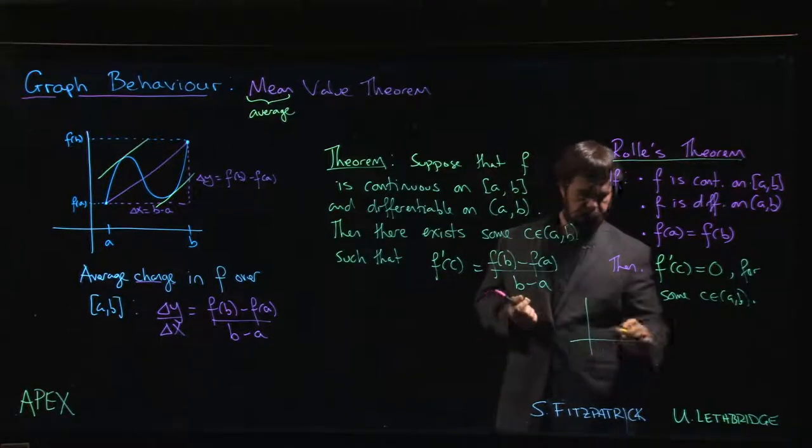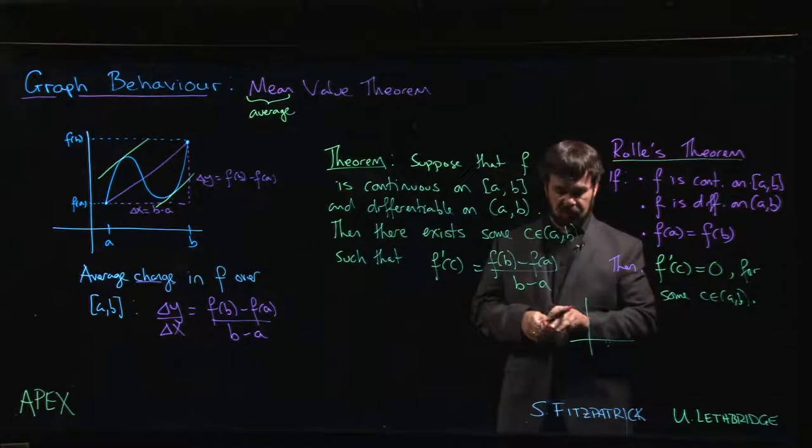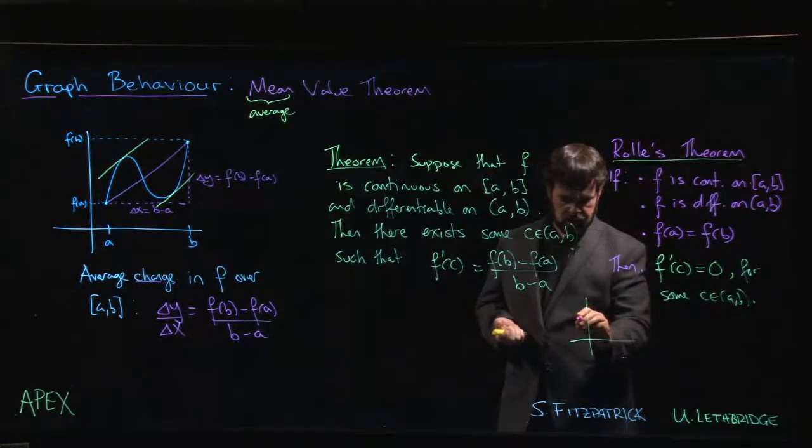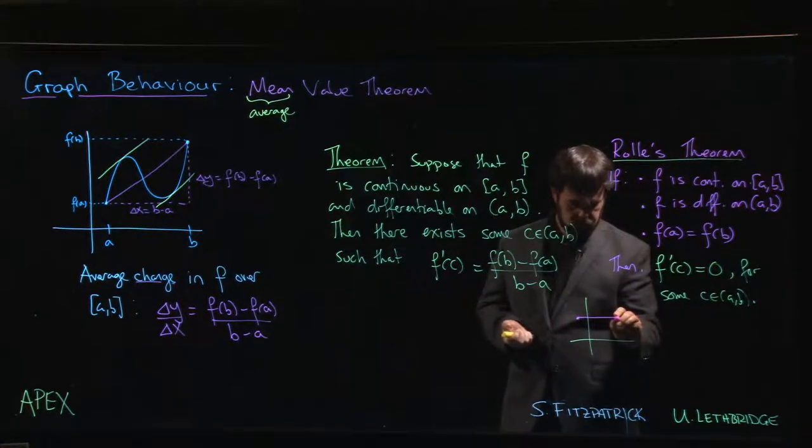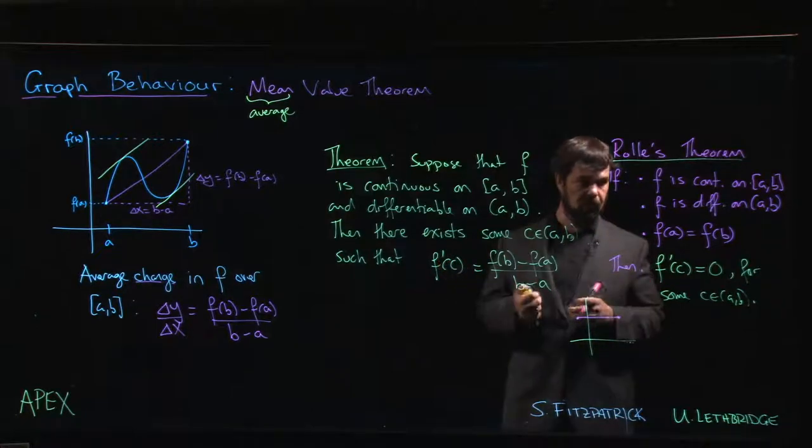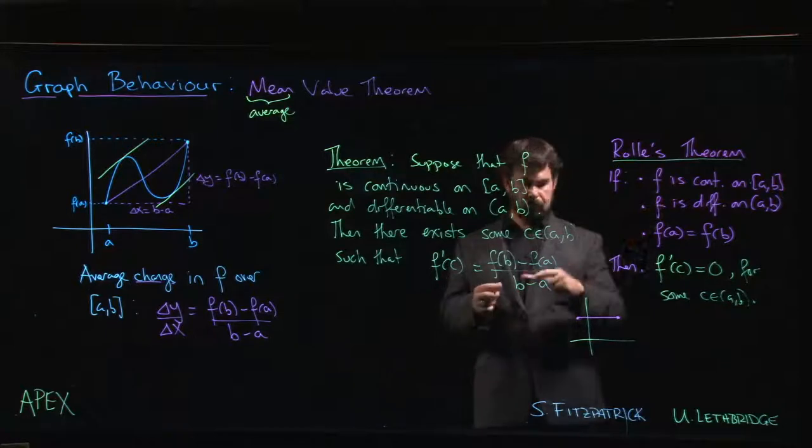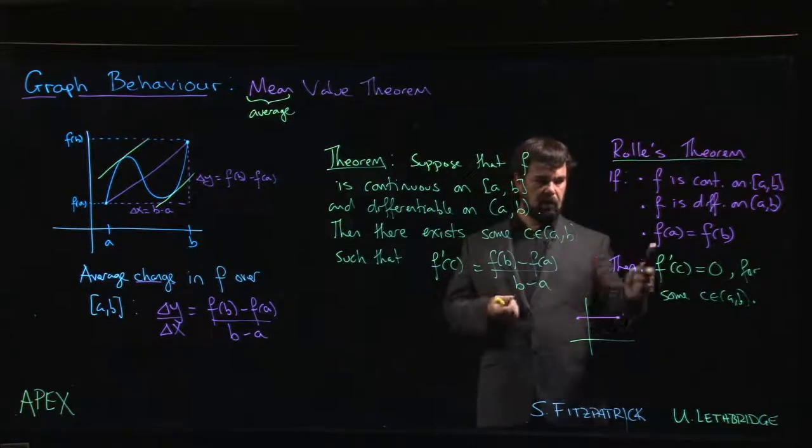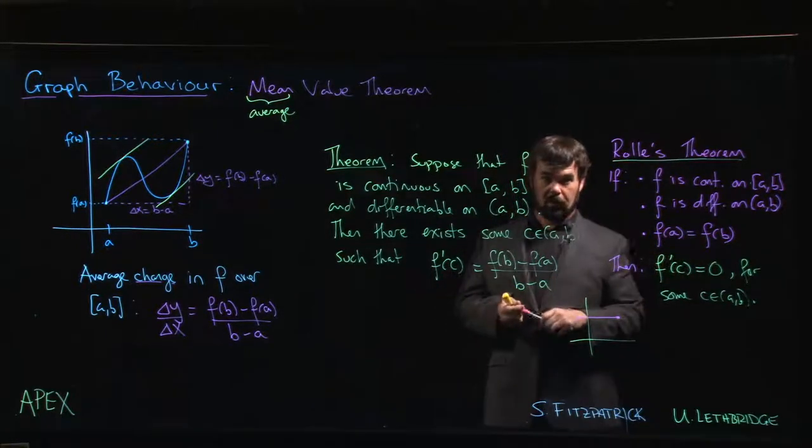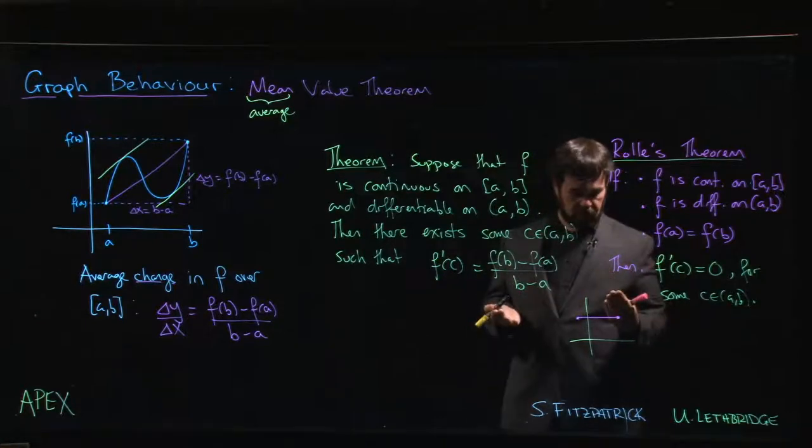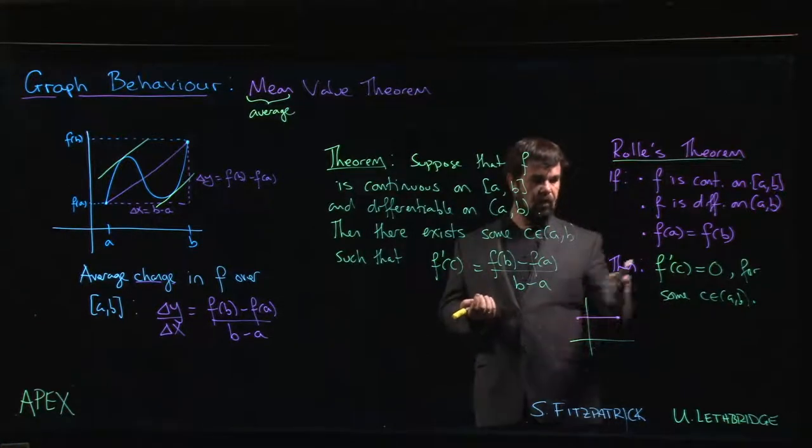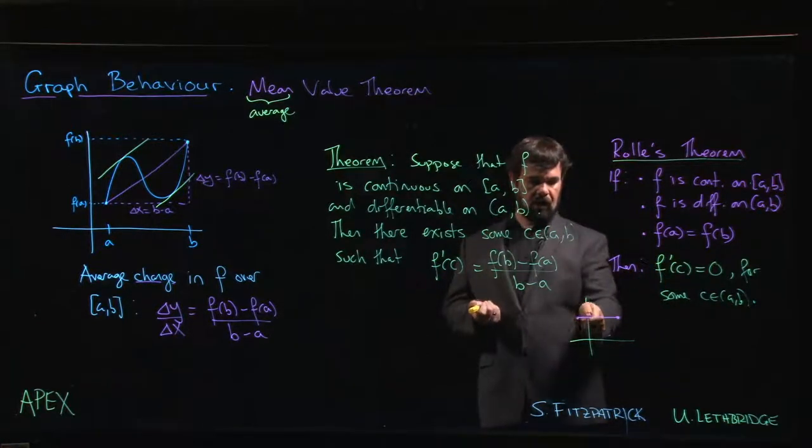One possible but not very interesting case for Rolle's Theorem is that your function is just constant. Constant functions are certainly continuous, they're differentiable everywhere, and certainly they have the same value at both endpoints—they have the same value at every point. We also know that the derivative is equal to zero at every single point on the interval, so Rolle's Theorem is true there.